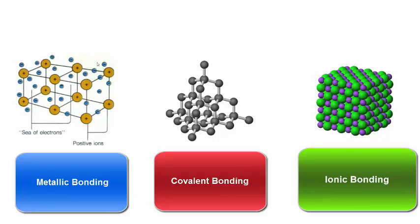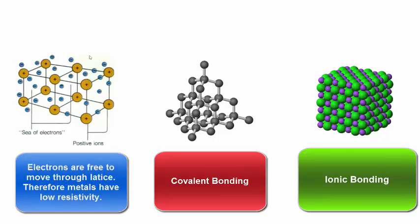In metals, there are many unbound electrons which are free to move throughout the metallic lattice, which means that the electrons can move around very easily, so they have a very low resistivity.